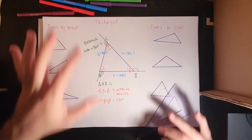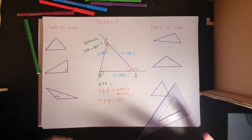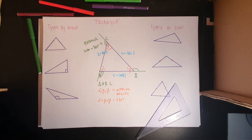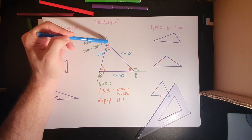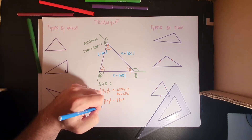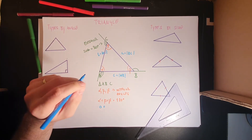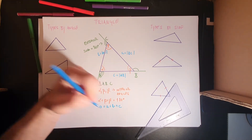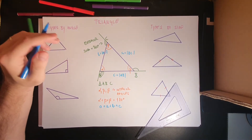Going back to the sides, one property we can measure for each triangle is the perimeter. Perimeter is the sum of all sides of a shape, and for a triangle it equals a plus b plus c.